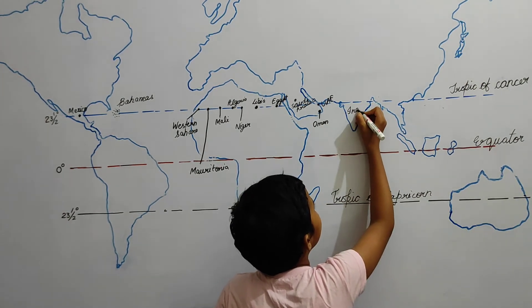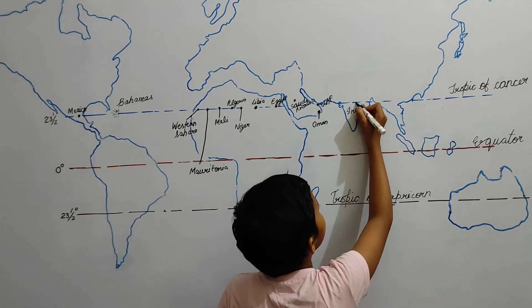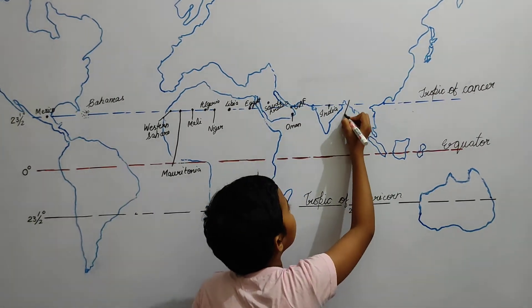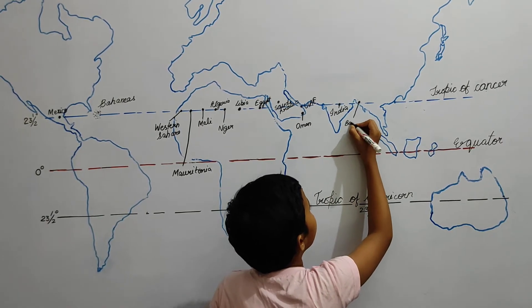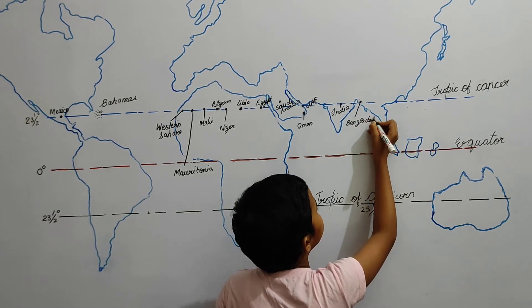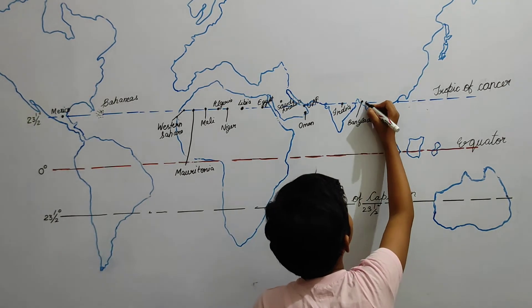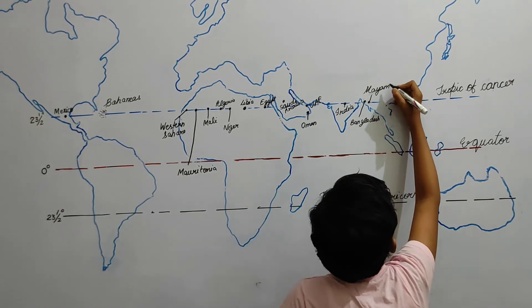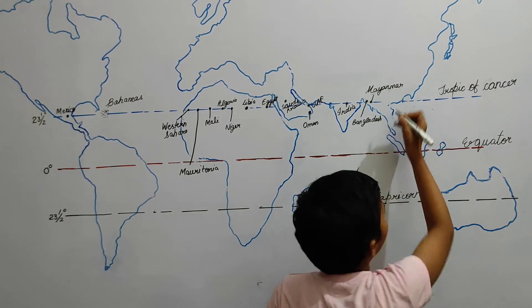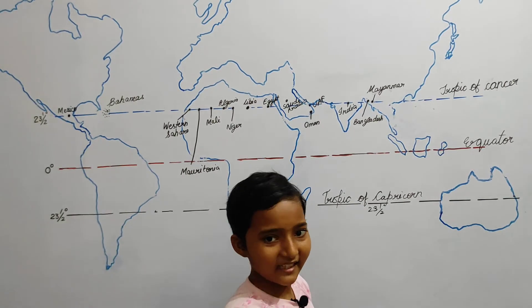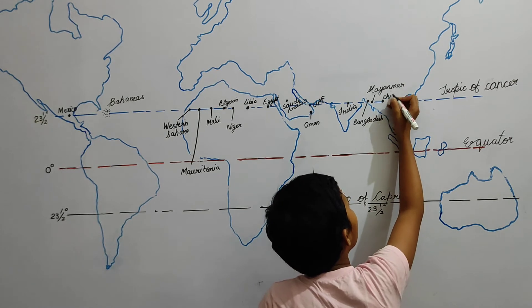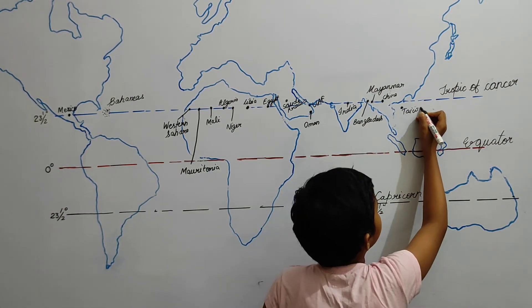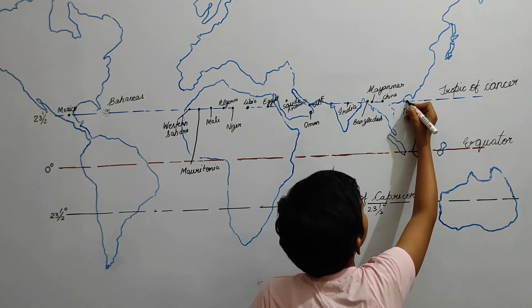Now we are coming to our country India. Then the next country is Bangladesh. And here one more country is Myanmar. And one big country here is China. And the last country is Taiwan, which is an island.